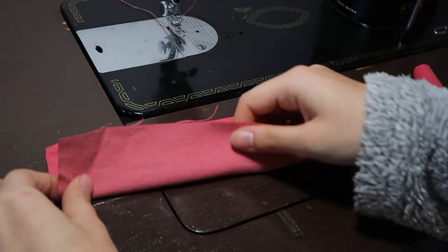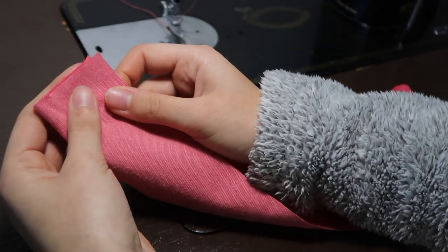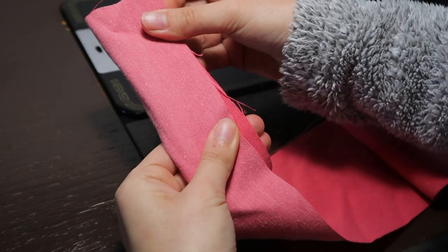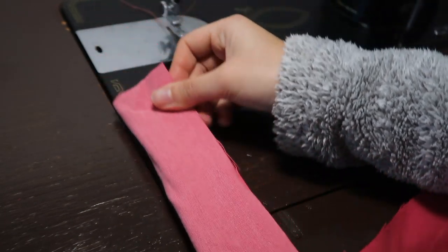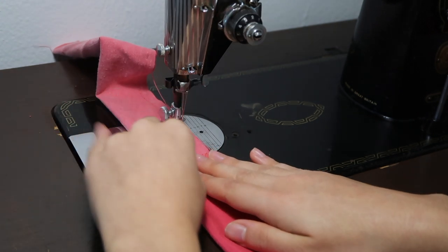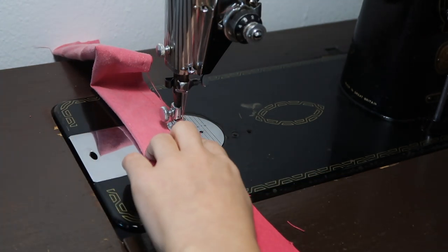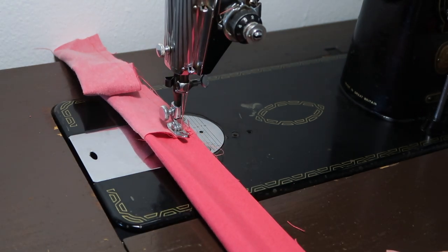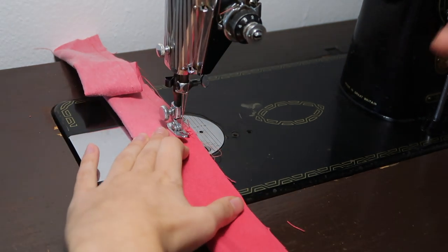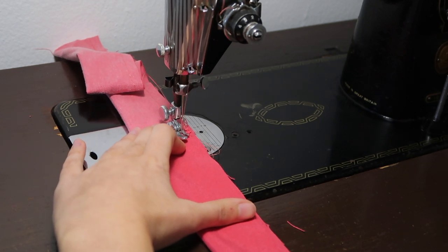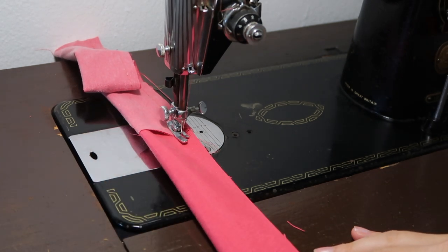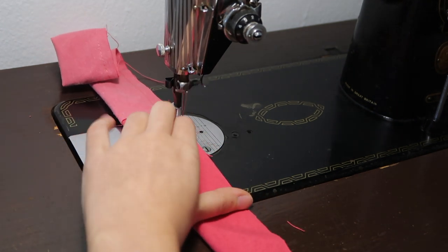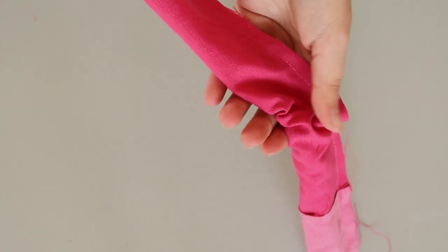Fold that rectangle in half, lengthwise, with the right sides facing each other and sew the side. Turn the tube right side out.